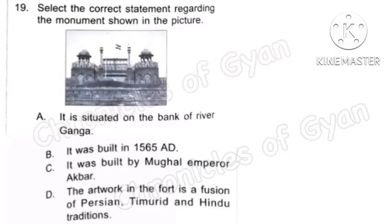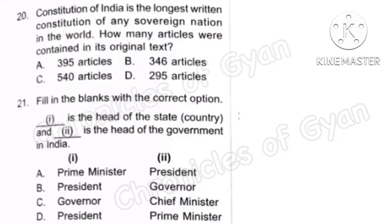Question 19: Select the correct statement regarding the monument shown in the picture. This monument is Red Fort or Lal Qila of Delhi. Option A — it is situated on the bank of river Ganga — is incorrect; it is on the bank of river Yamuna. Option B — it was built in 1565 AD — is incorrect; it was built in 1526 AD. Option C — it was built by Mughal Emperor Akbar — is incorrect; it was built by Mughal Emperor Shah Jahan. Option D — the artwork in the fort is a fusion of Persian, Timurid and Hindu traditions — is the correct statement.